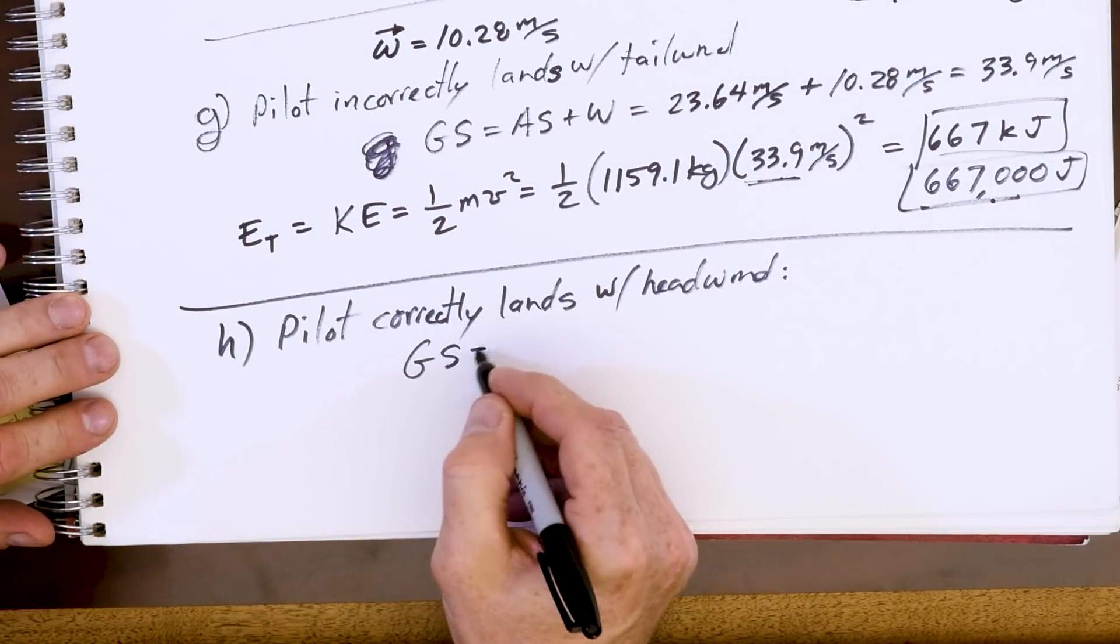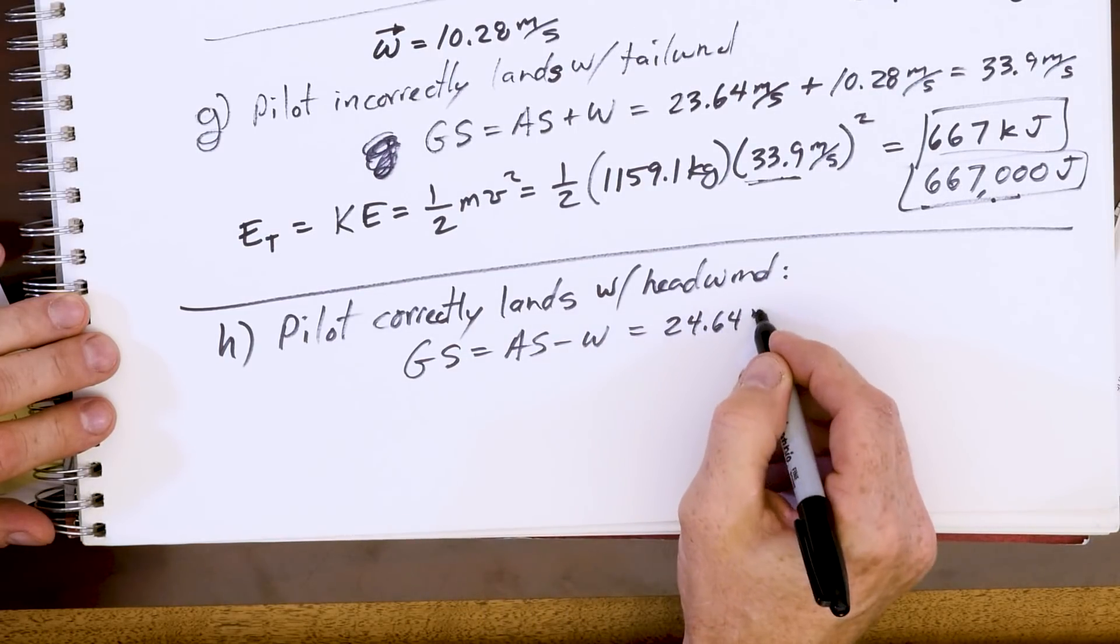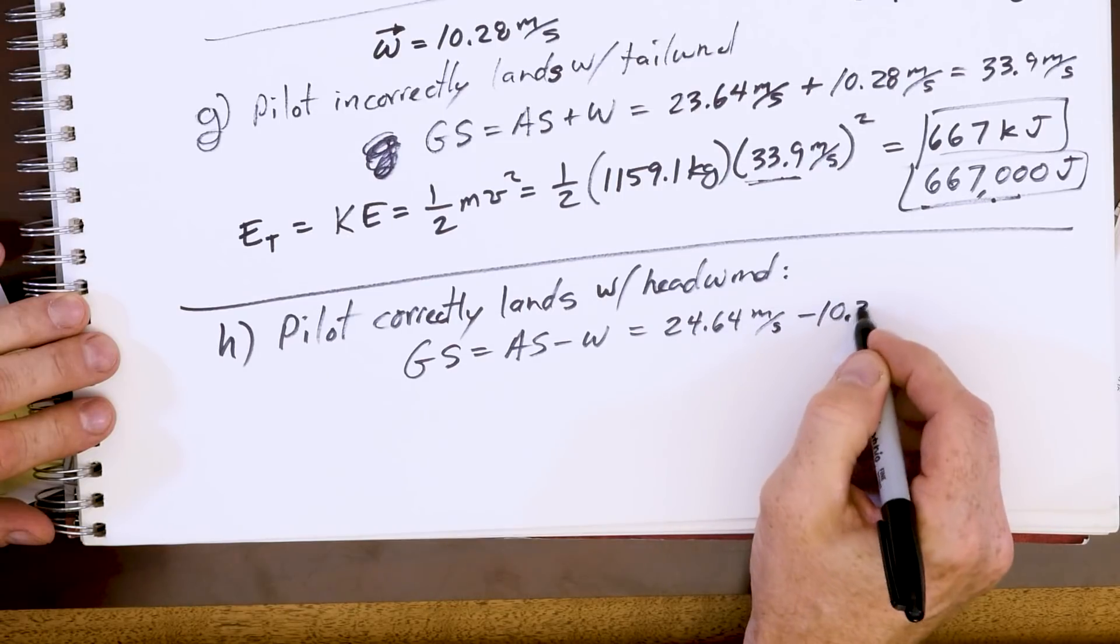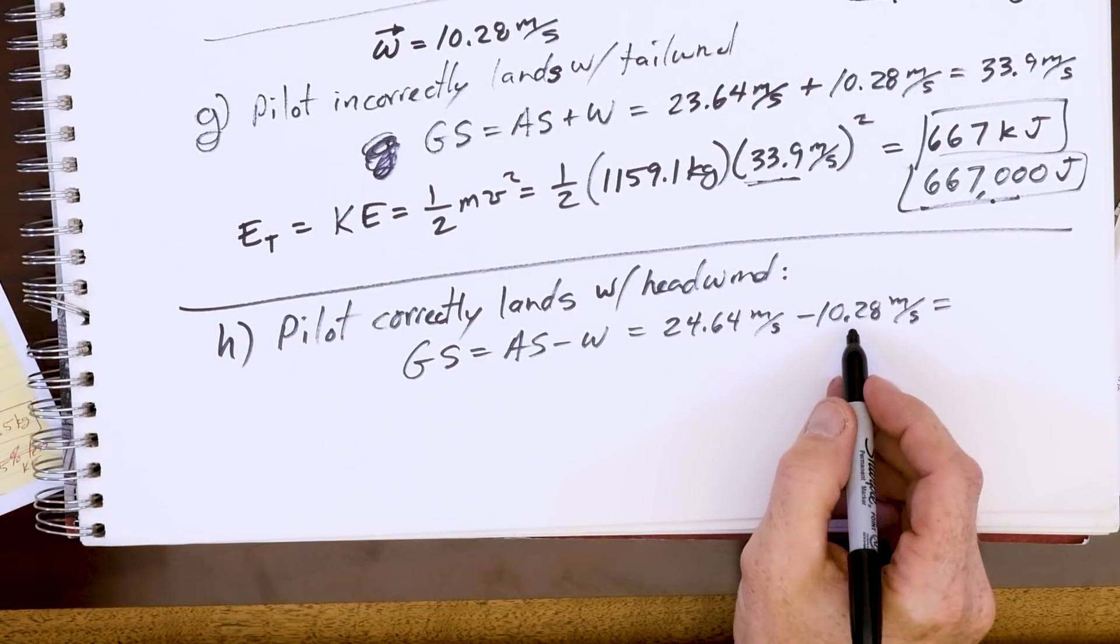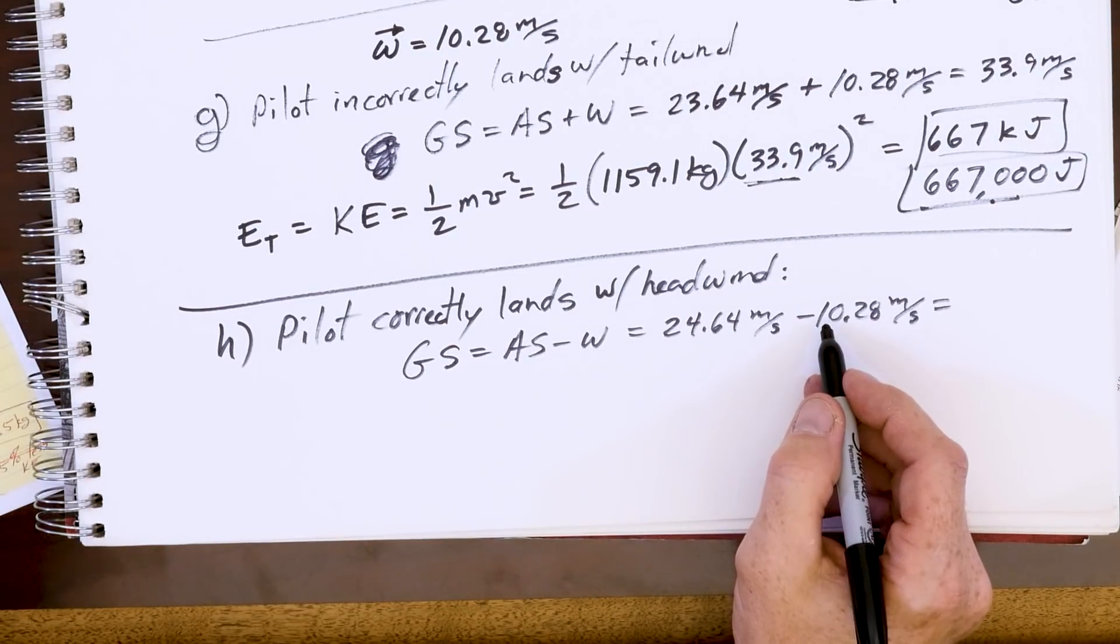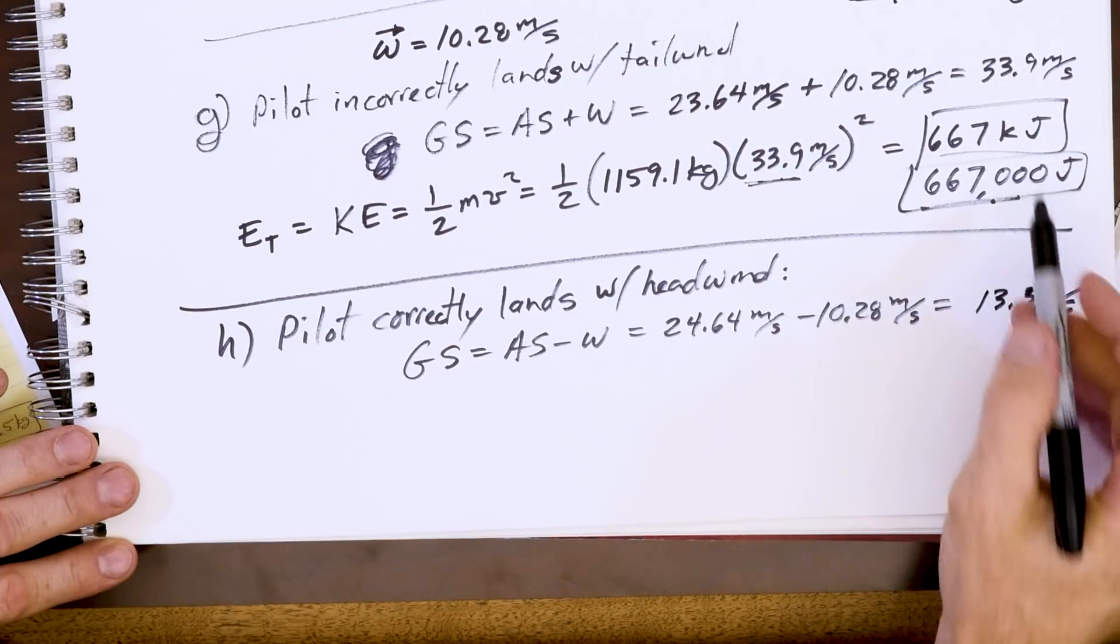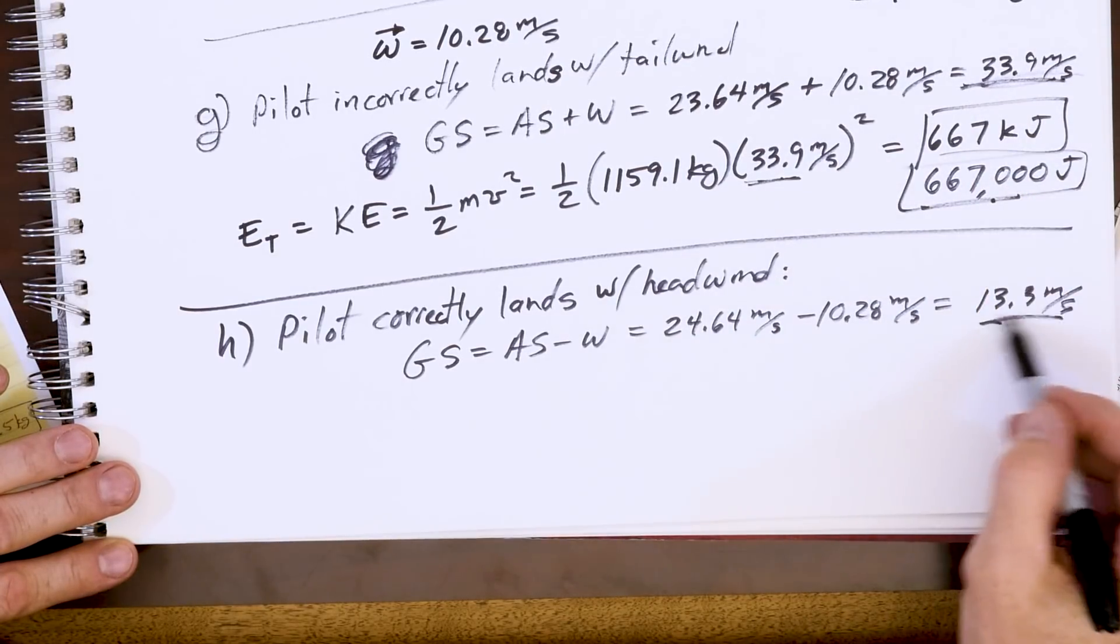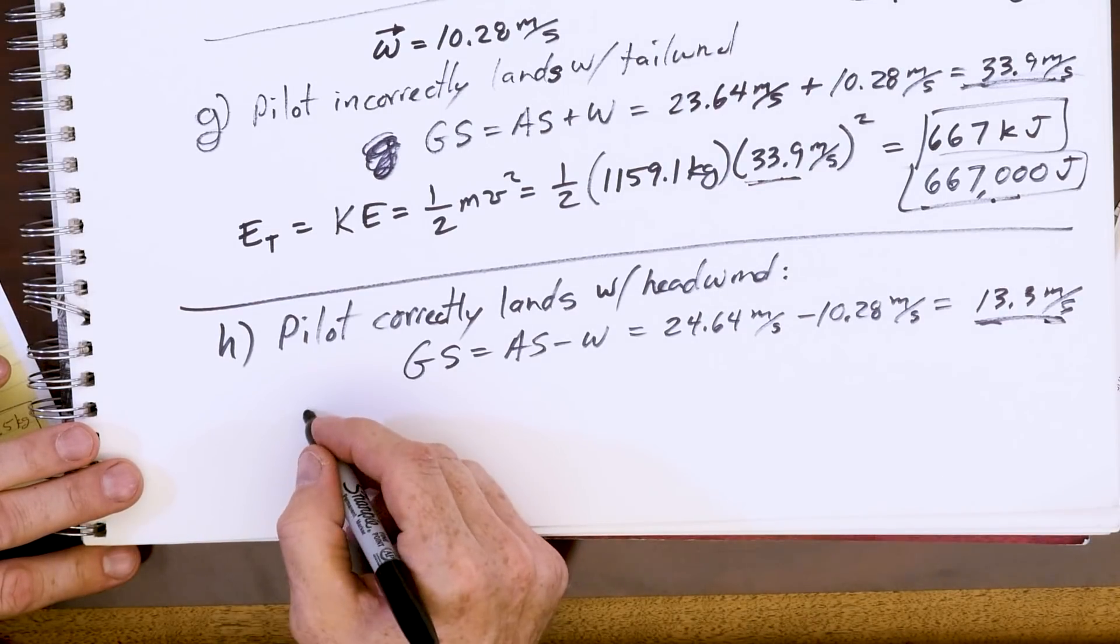Now their ground speed is equal to their airspeed minus the wind: 23.64 meters per second minus 10.28 meters per second. You can already see this is going to be a lot less - this is in the low teens. This is 13.3 meters per second. Some of you can already see when you square them, the effect becomes much more.